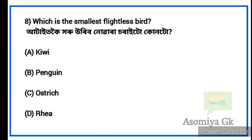Next question: Which is the smallest flightless bird? Option 1: Kiwi. Kiwi is the smallest flightless bird. The smallest flightless bird is the Kiwi, not the ostrich.